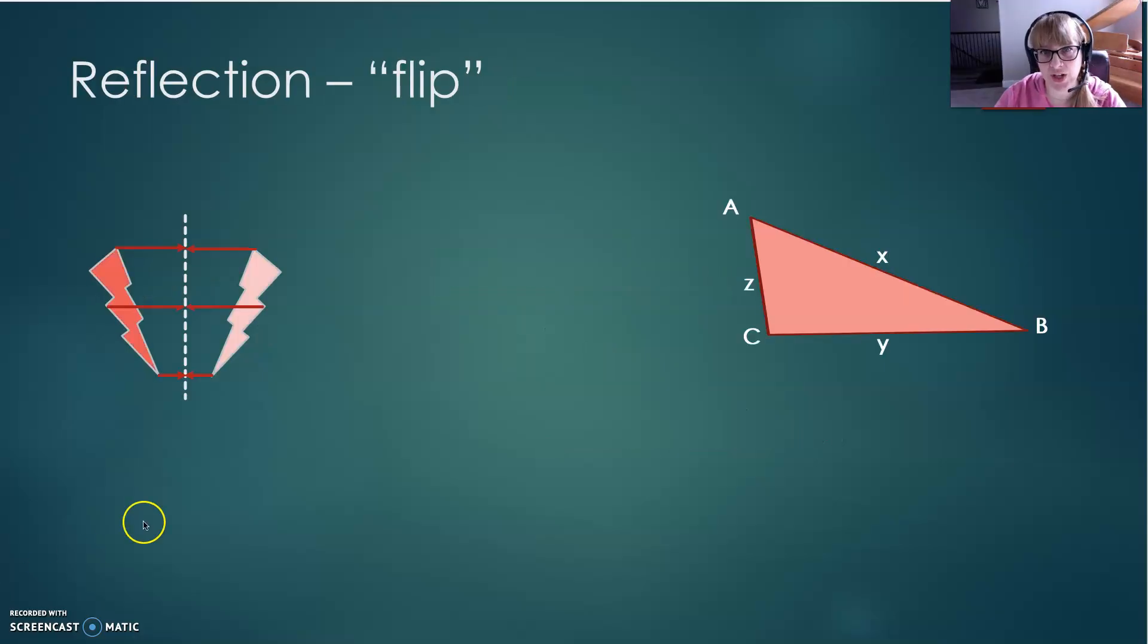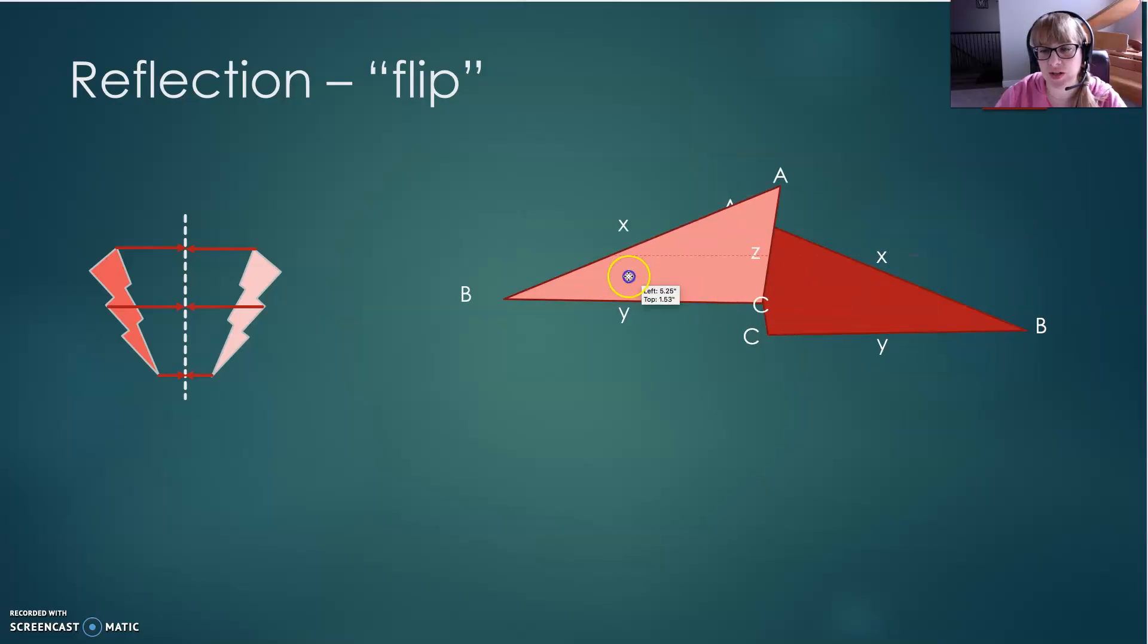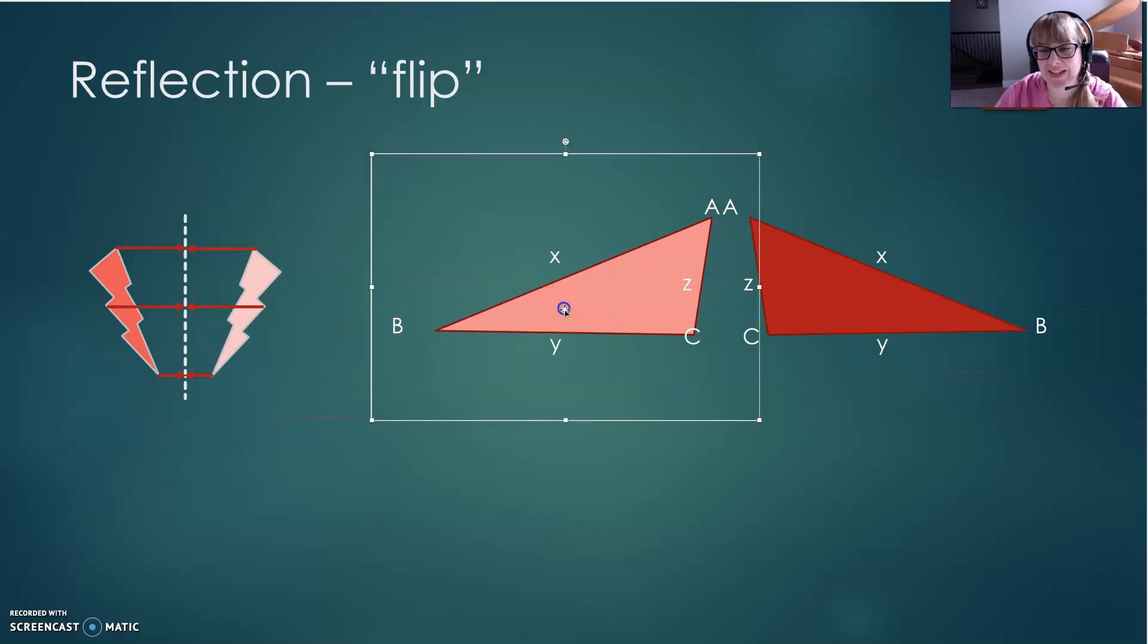We can see this in a reflection as well. Notice these two figures are lined up so that we can see that they are congruent. But when I take this figure and perform a reflection, we can see that it makes sense that it would still be congruent.